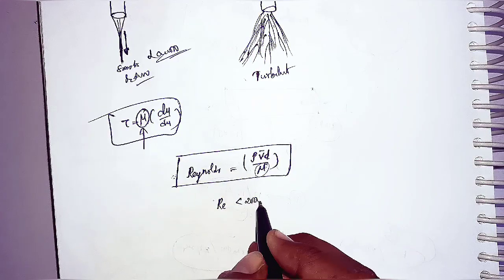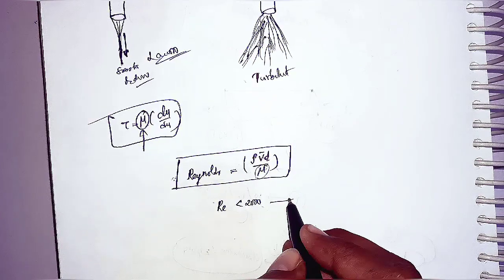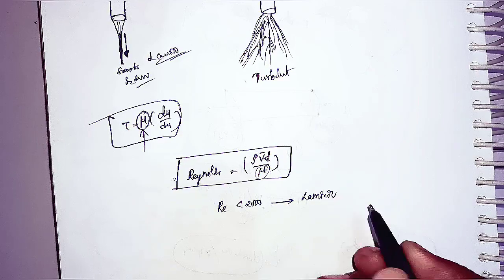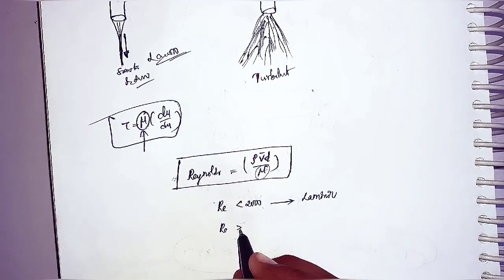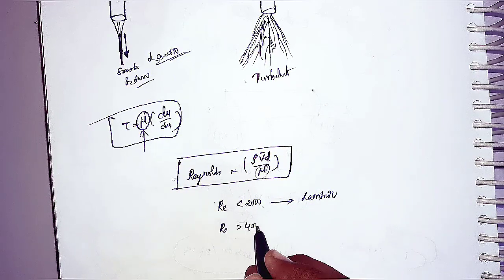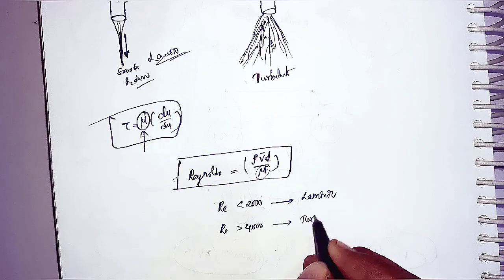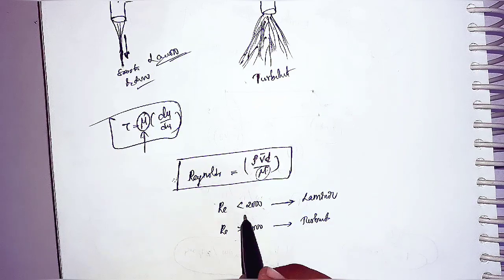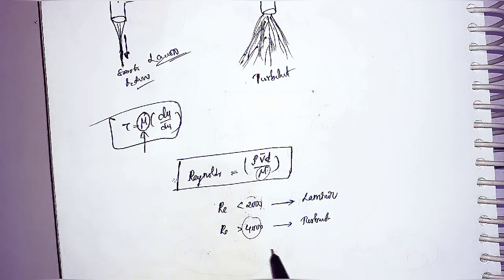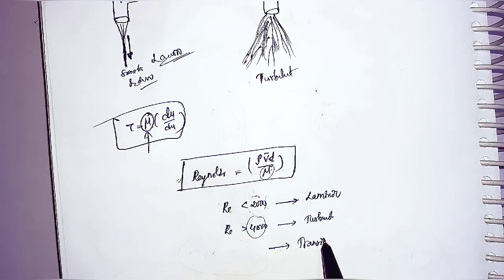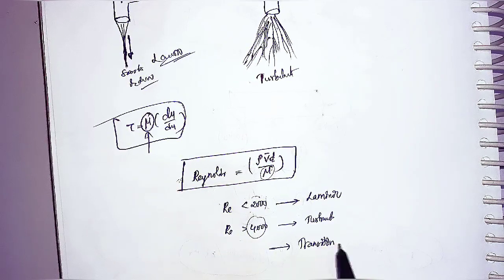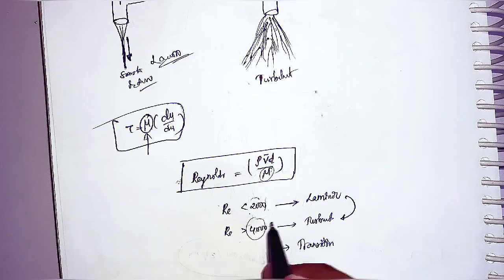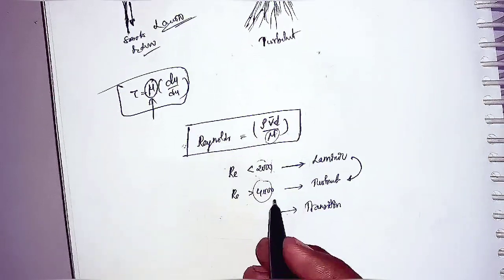Based on the Reynolds number, we predict whether flow is laminar or turbulent. If Re is less than 2000, the flow is laminar. If Re is greater than 4000, the flow is turbulent. If Re is between 2000 and 4000, it is called transition flow — the flow is transitioning from laminar to turbulent.